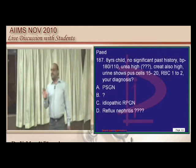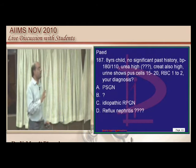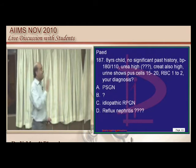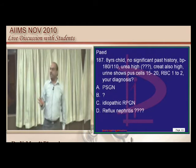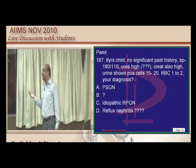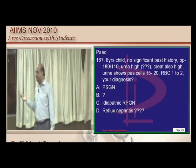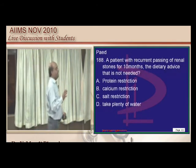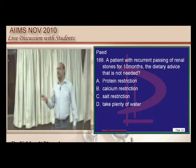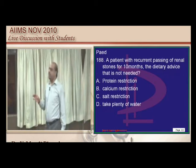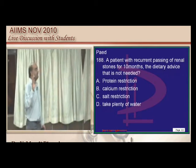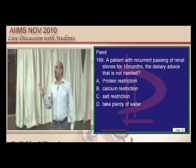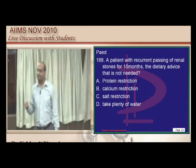Pus cells of 15–20 in urine with very high urea and creatinine in an 8-year-old child favor reflux nephropathy. For recurrent renal stones, management includes calcium salt restriction and plenty of water; protein restriction is not indicated.